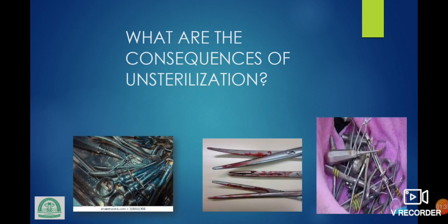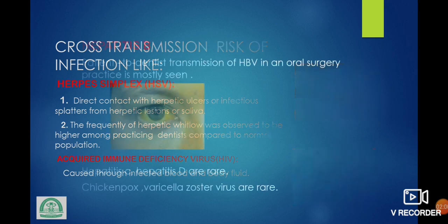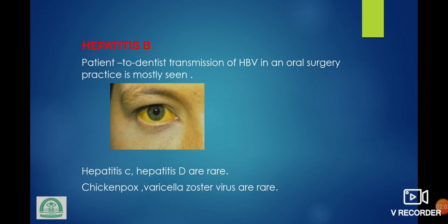What are the consequences of unsterilization? It causes infections like herpes simplex virus, acquired immune deficiency virus, and hepatitis B virus. Herpes simplex virus: direct contact with the herpetic ulcer or infectious matters for herpetic lesion or saliva. The frequency of herpetic whitlow was observed in dentists compared to the normal population. Acquired immunodeficiency virus caused through infected blood and body fluid. Hepatitis B: patient to dentist transmission of hepatitis B virus in an oral surgery practice is mostly seen.